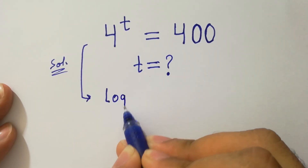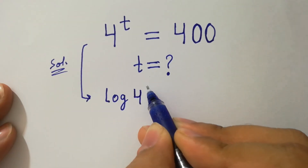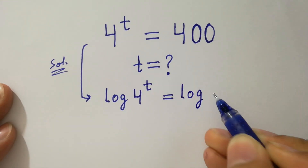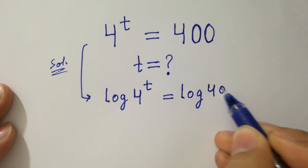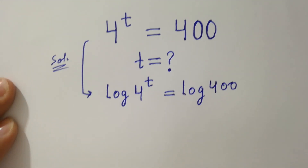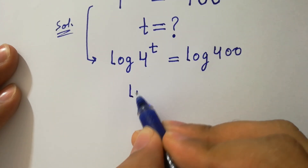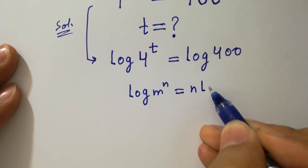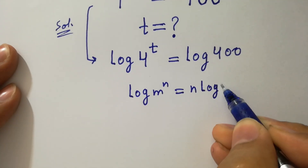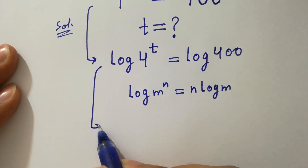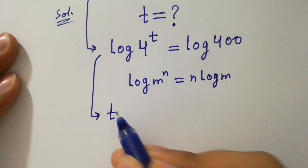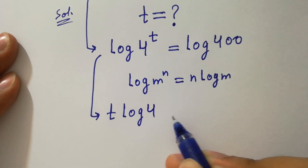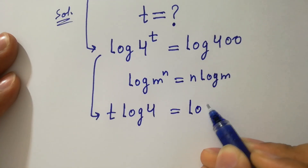Log 4 to the power t equals log 400. Since log m to the power n equals n log m, then it will be t log 4 equals log 400.